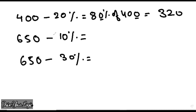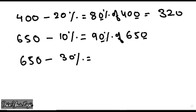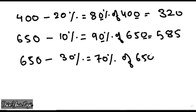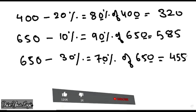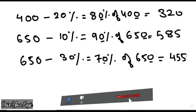Next one: 650 minus 10 percent. What is left? 90 percent is left. So 90 percent of 650 — discard the zero, 65 into 9, that is 585. Last one: 650 minus 30 percent. What is left? 70 percent is left. 70 percent of 650 — discard the zeros, 7 into 65, and your answer is 455. Very easy process.